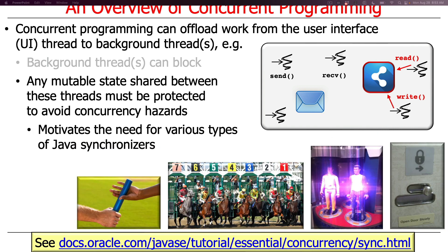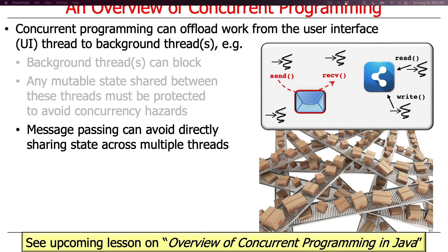To avoid these problems, Java provides various synchronizers: Java ReentrantLocks for mutual exclusion, atomic operations for all-or-nothing computation, coordination mechanisms like Java condition objects for ordering thread execution, and barrier synchronizers so all threads can start or finish at the same time. More details are available through the Oracle Java documentation. Message passing can also be used to avoid directly sharing state across multiple threads.